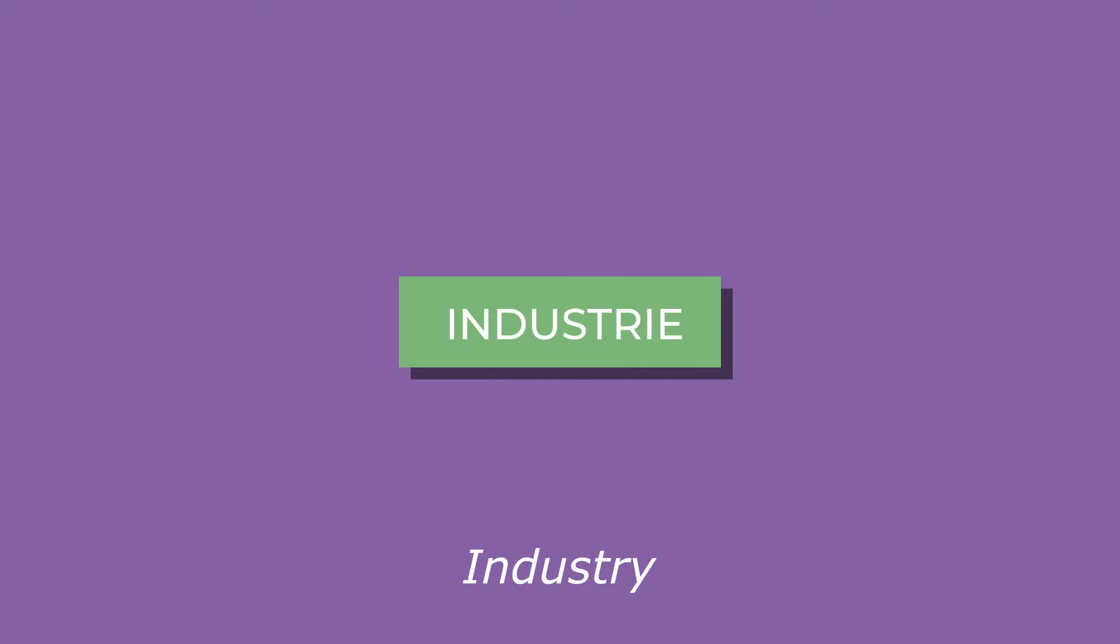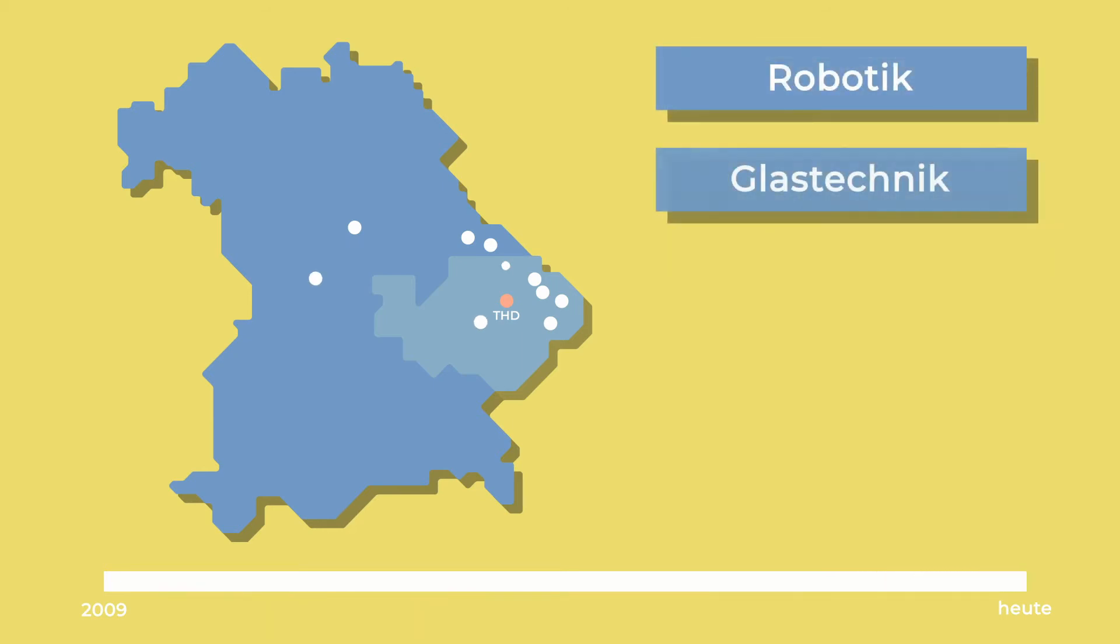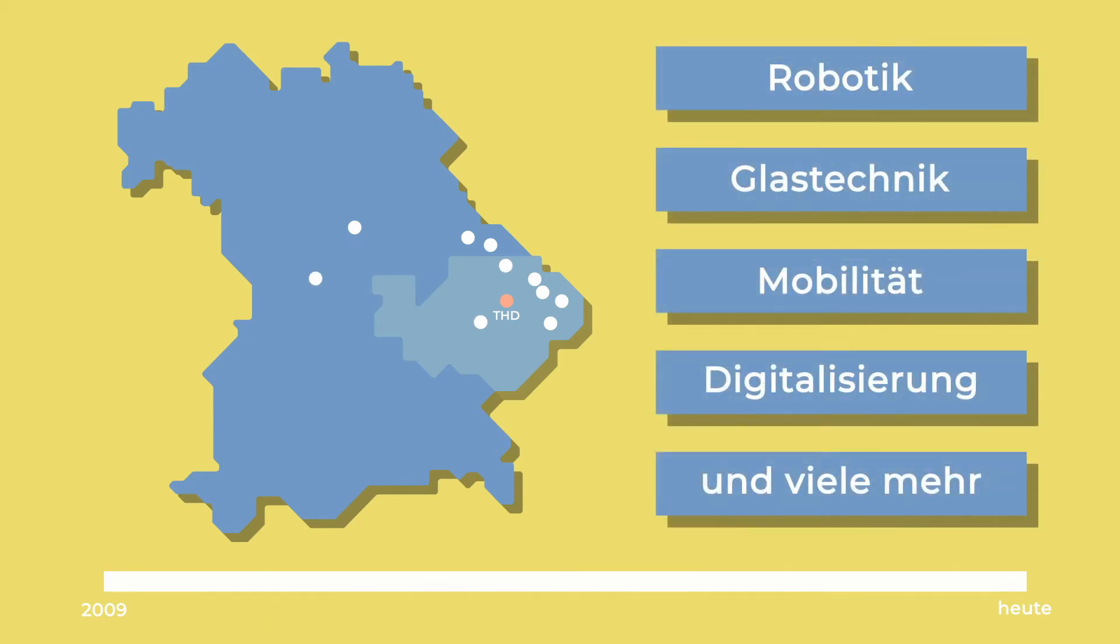The companies profit from their lab equipment and DIT's expertise. Since 2009, DIT has been founding technology campuses in Bavaria. Topics that are addressed are for example robotics, glass technology, and future mobility.